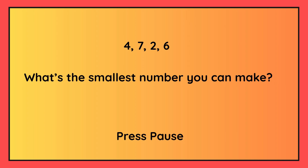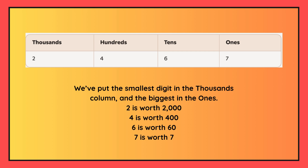What's the smallest number you can make? You should have put two, which is the smallest number, in the thousands column, four in the hundreds column, six in the tens column and seven in the ones column. So the number is two thousand four hundred and sixty-seven.